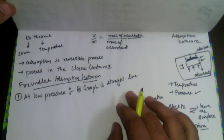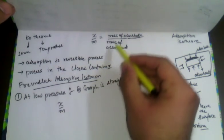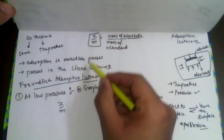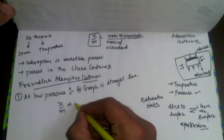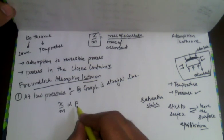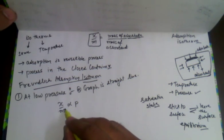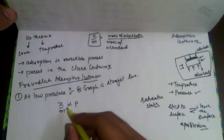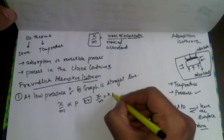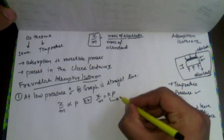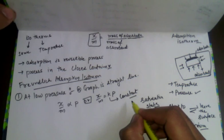He found that the amount of gas sticking to the surface, expressed as x/m, is directly proportional to the pressure. As we increase the pressure, the amount of substance sticking to the surface keeps on increasing. Removing the proportionality constant, we can write x/m = kP, where k is a constant — meaning a value that cannot be altered.